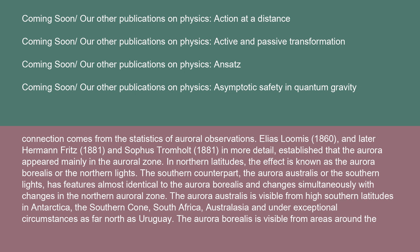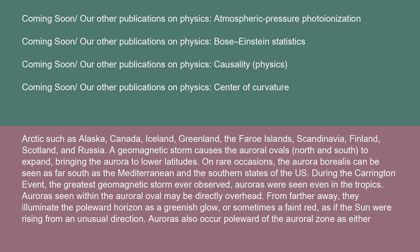The aurora borealis is visible from areas around the Arctic, such as Alaska, Canada, Iceland, Greenland, the Faroe Islands, Scandinavia, Finland, Scotland, and Russia. A geomagnetic storm causes the auroral ovals, north and south, to expand, bringing the aurora to lower latitudes. On rare occasions, the aurora borealis can be seen as far south as the Mediterranean and the southern states of the U.S. During the Carrington event, the greatest geomagnetic storm ever observed, auroras were seen even in the tropics.